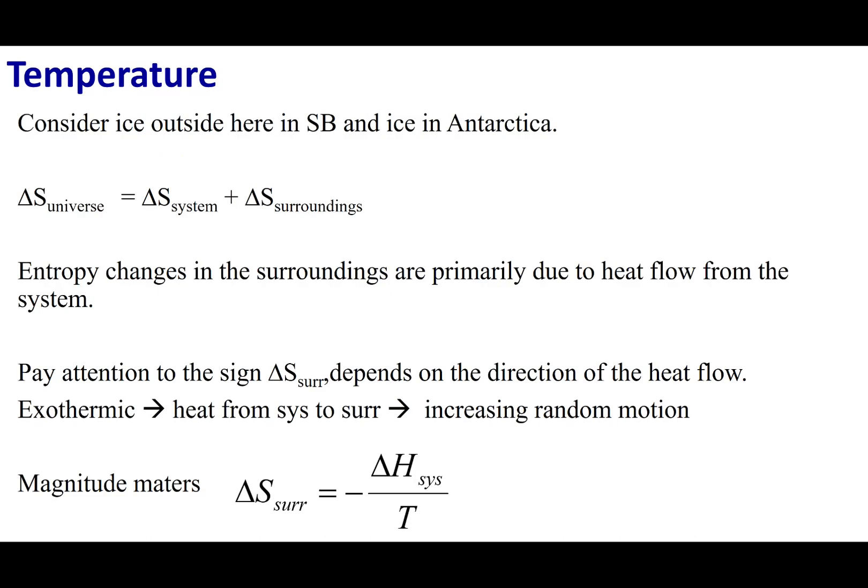Now let's talk about the effects of temperature. Consider a process that is spontaneous in one place and non-spontaneous in another. Take the melting of ice: if you take a piece of ice and lay it on the ground in Santa Barbara, it would melt. However, if you take a piece of ice and lay it on the ground in Antarctica, it would not melt. Why is it spontaneous in one place and not the other? This has to do with the temperature difference.